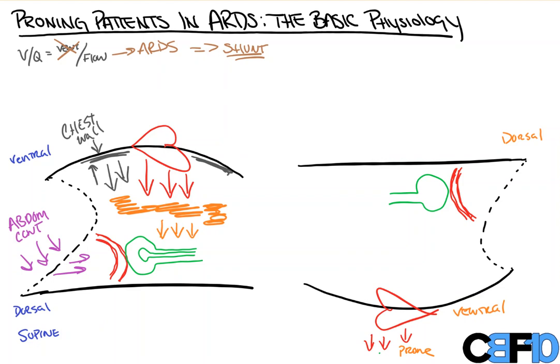We can see that the same thing happens with all of that junky fluid edematous lung tissue is also going to now push ventrally instead of dorsally, which is where our blood flow is. And our abdominal content is also now dumped anteriorly so that there's less pressure on the posterior aspect of the diaphragm.